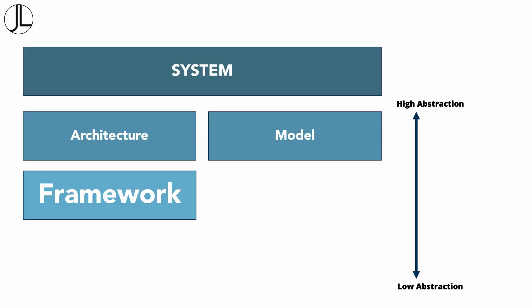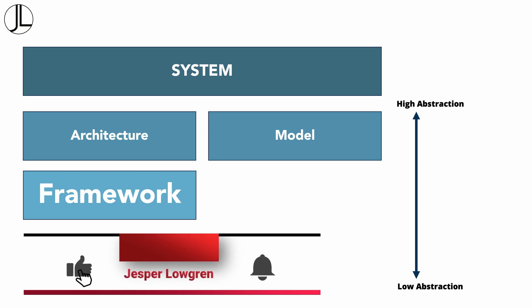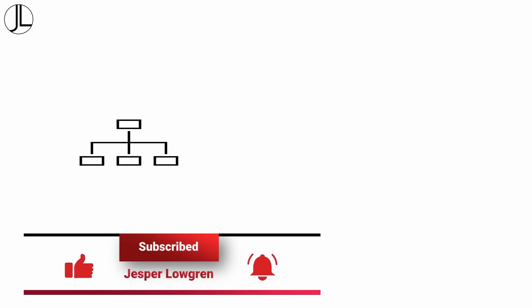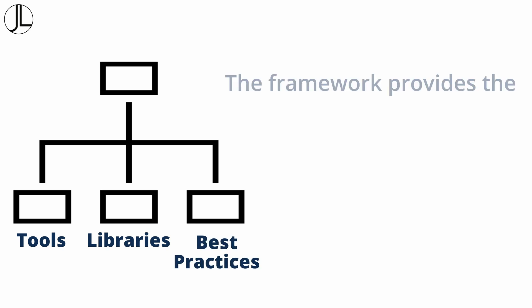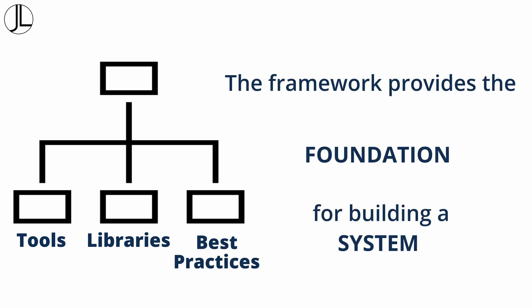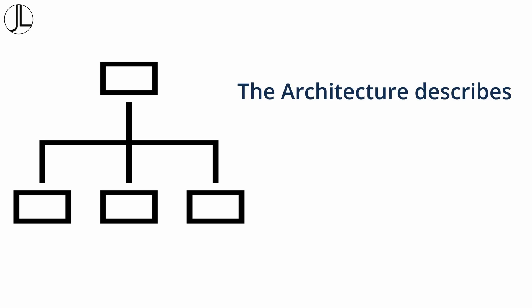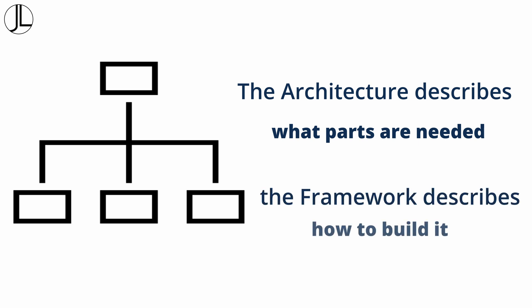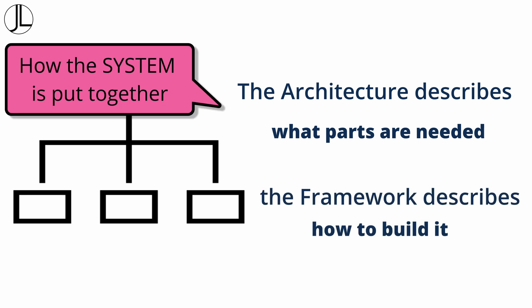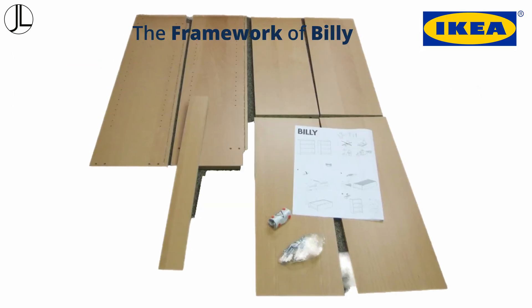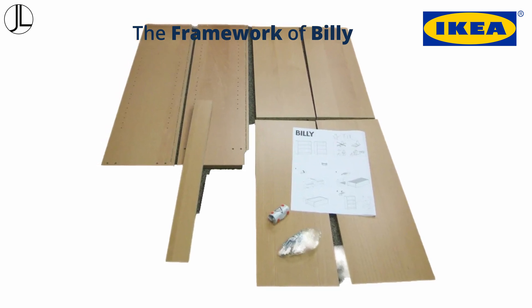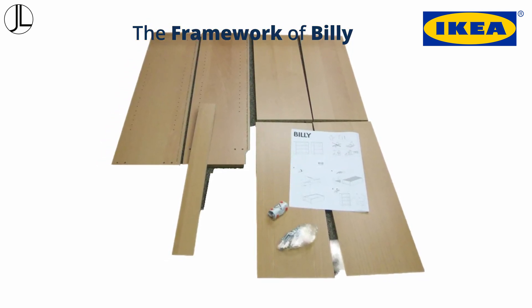Next comes the framework, another beloved word by architects. A framework is a set of tools, libraries, and best practices that provide the foundation for building a system. Whereas the architecture describes what parts are needed, a framework describes how to build it. The framework of Billy describes everything needed to put Billy together.